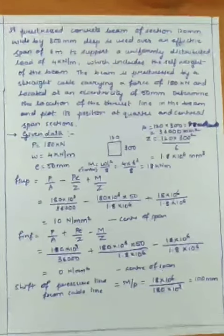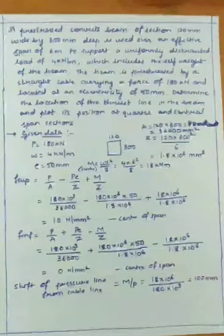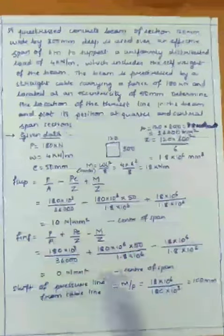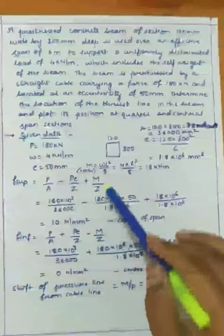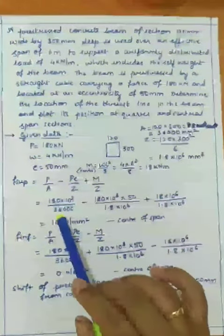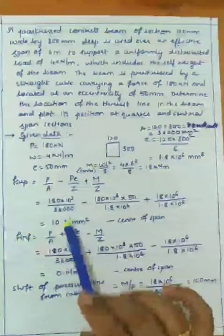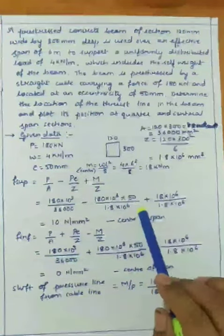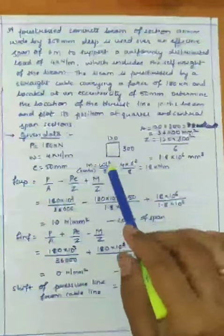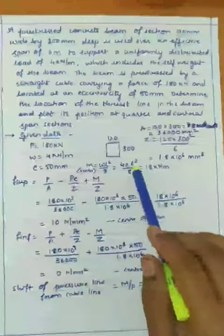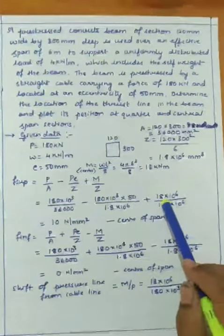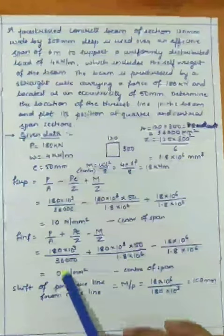The resultant stresses at top fiber (F superior) and bottom fiber (F inferior) are found using: P/A ∓ PE/Z ± M/Z. Prestressing force = 180 kN. At center span, bending moment M = WL²/8 = 4 × 6² / 8 = 18 kN·m = 18 × 10⁶ N·mm. So M/Z = 18 × 10⁶ / 1.8 × 10⁶ = 10 N/mm². F superior = P/A − PE/Z + M/Z = 10 N/mm².